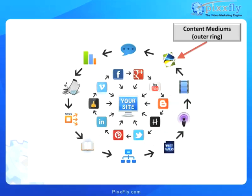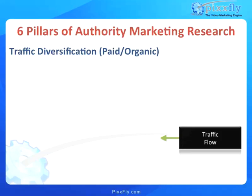This is just a simple example, but looking at different content mediums, also known as the outer ring. In order to achieve profitable content marketing, you now need to know where you're going to be driving traffic and what that flow looks like, either through paid traffic or organic.